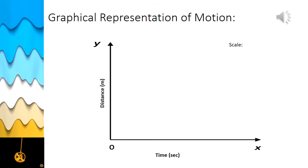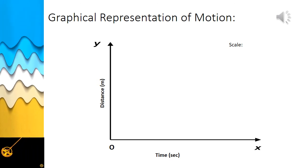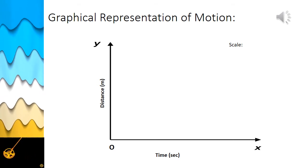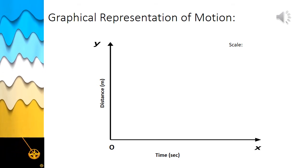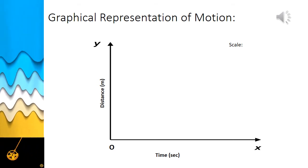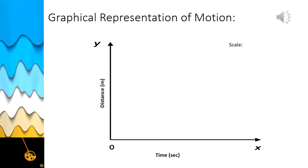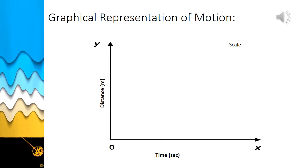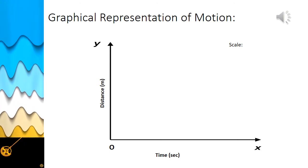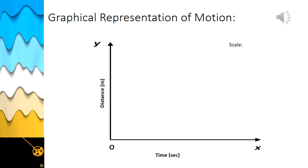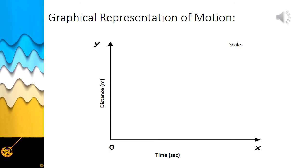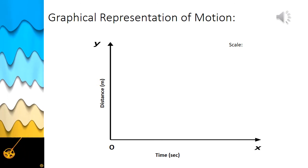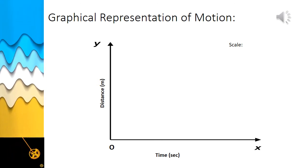Distance is the dependent quantity, so distance is shown along the Y axis. Label the Y axis by writing 'distance' and its unit in brackets, followed by an arrow. Now you should choose suitable scales so as to represent large values of time and distance conveniently on the small graph paper. Mark values for time and distance on the respective axes according to the scale you have chosen.